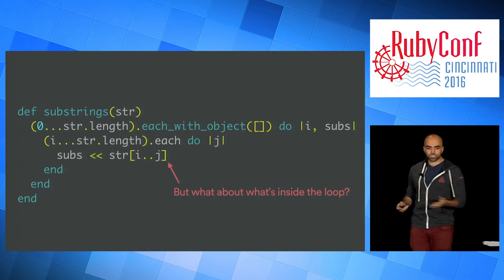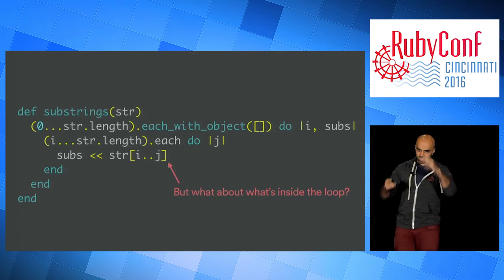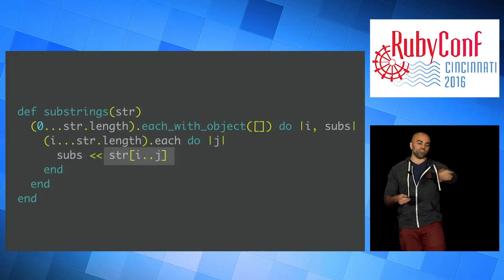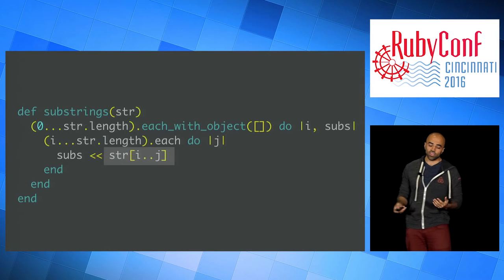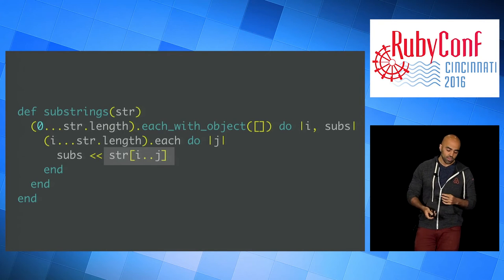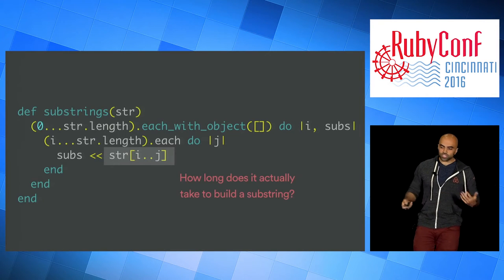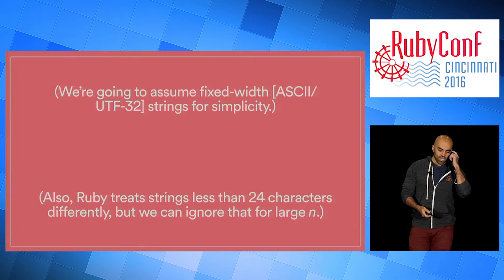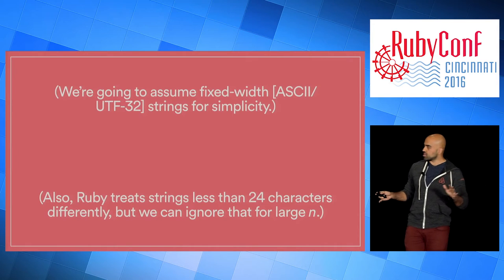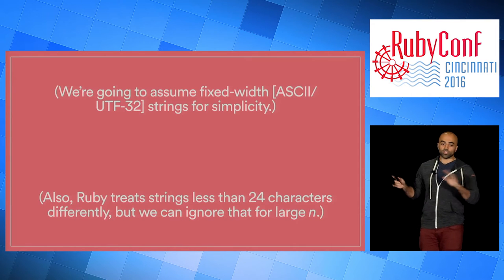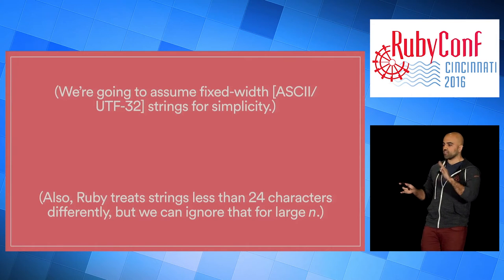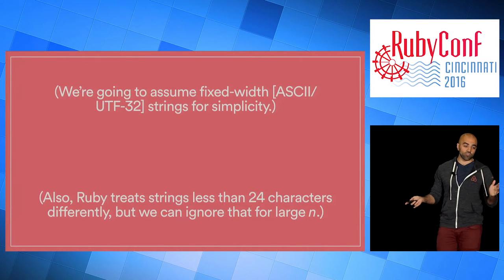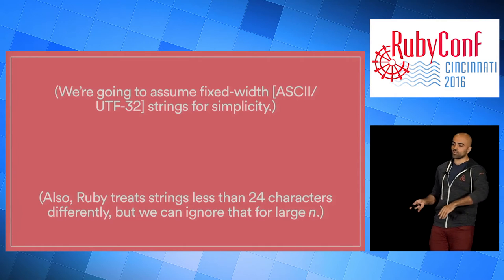But what about what's inside the loop? We know that shoveling into an array is O(1) — amortized. But how long does it actually take to build a substring from i to j? For simplicity, we'll assume fixed-width strings. Even if they're not fixed-width, this still holds. Also, Ruby treats strings less than 24 characters differently, but for large n we can ignore that.